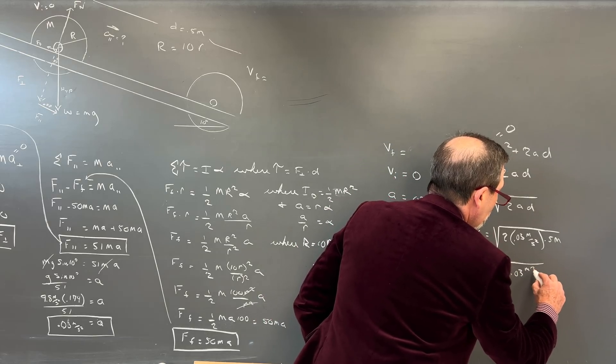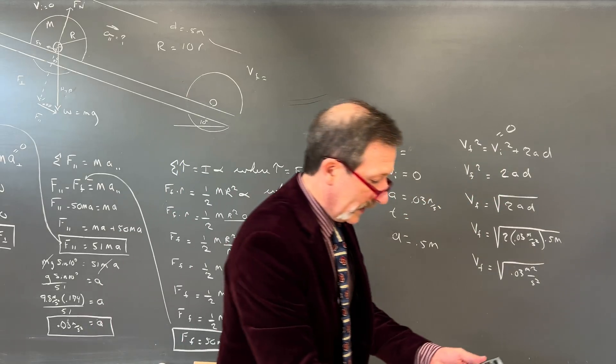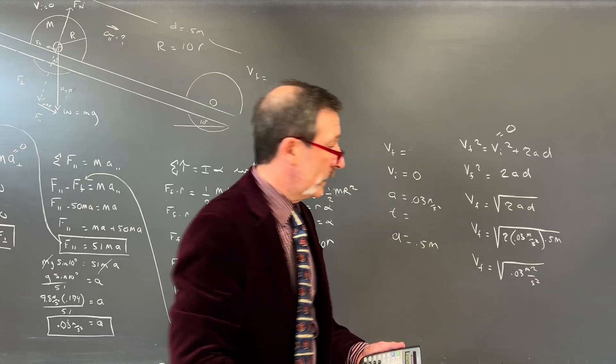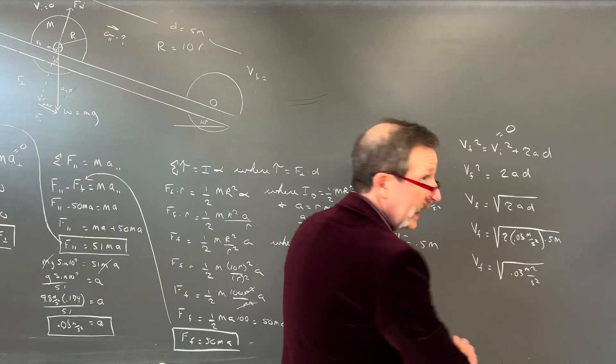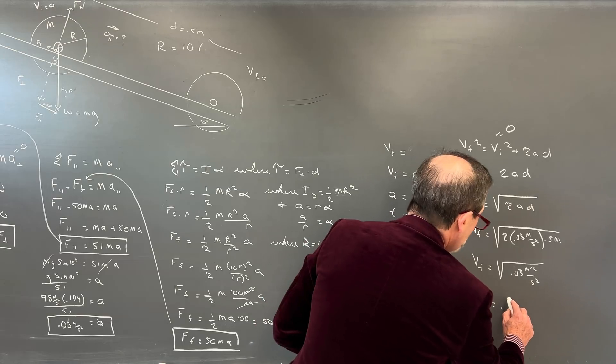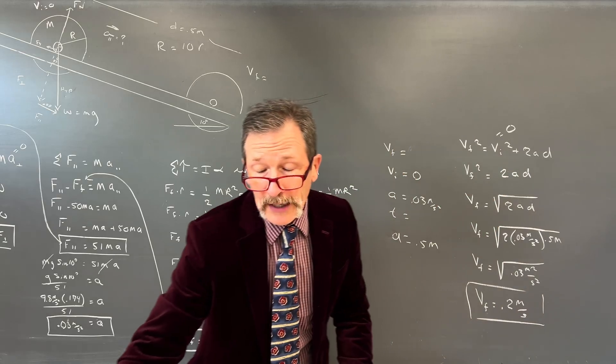VF squared equals my VI squared plus 2AD. And I can end up saying, my VI is equal to 0, so I'll just get rid of that. Now I can say VF squared equals 2AD. Take the square root of both sides, so I have VF will be the square root of 2A and D.